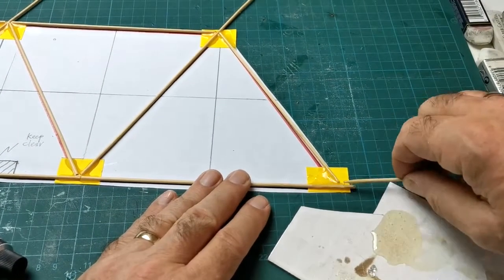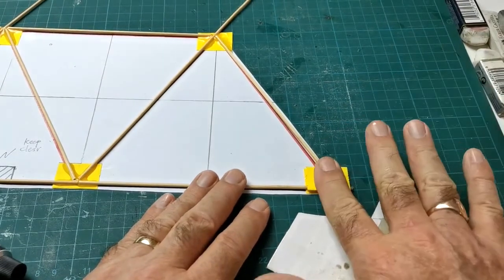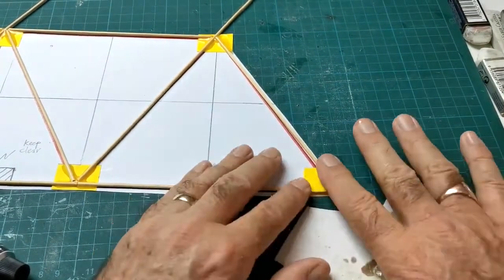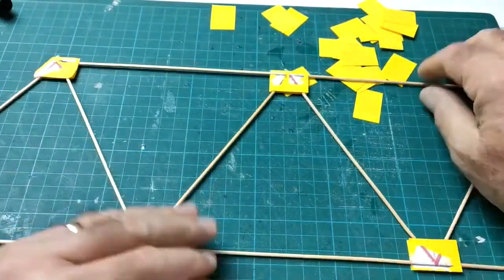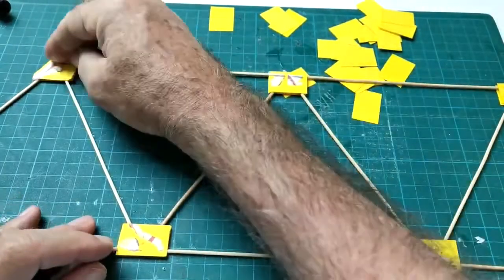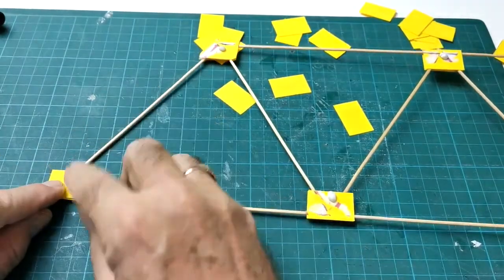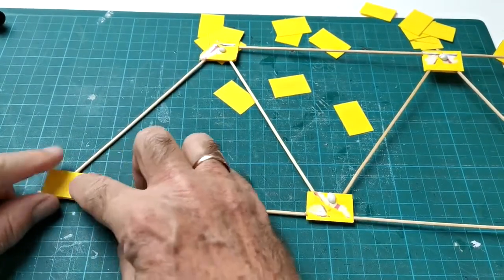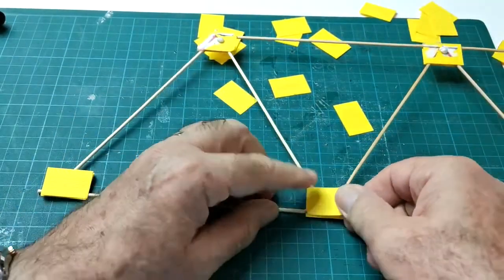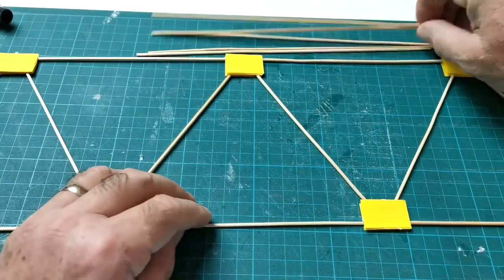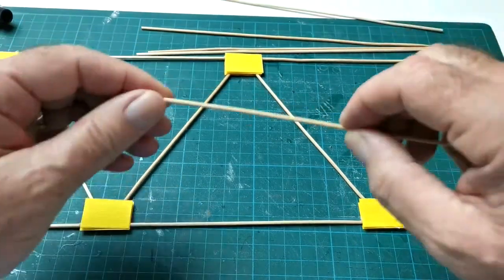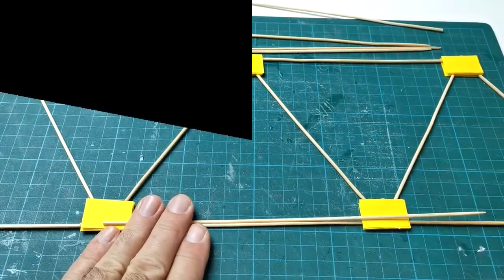To make the nodes extra strong on the bridge sides, I glue gussets on both sides of the members. Now to the second side of the bridge - you can either use the template again or you can build it on top of the first side. I'm using tack, and then the procedure is the same as for the first side.